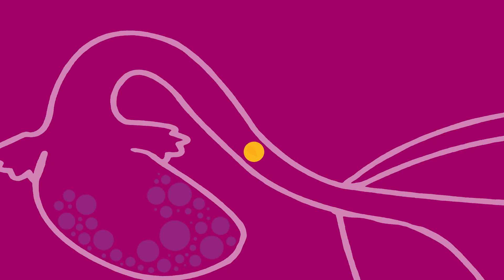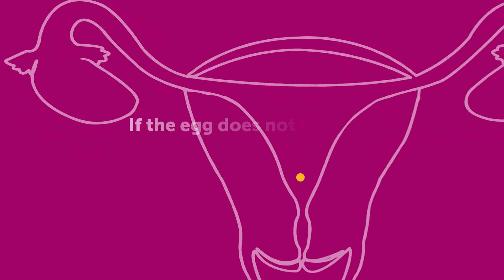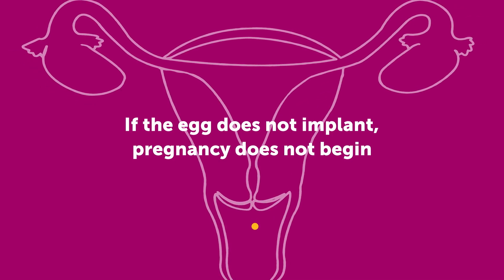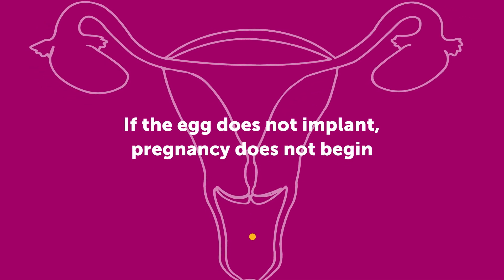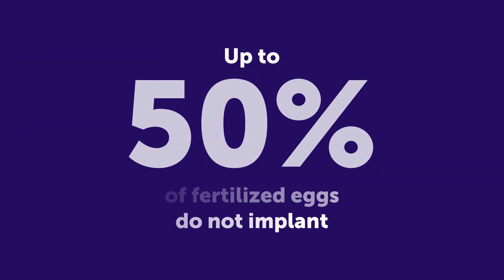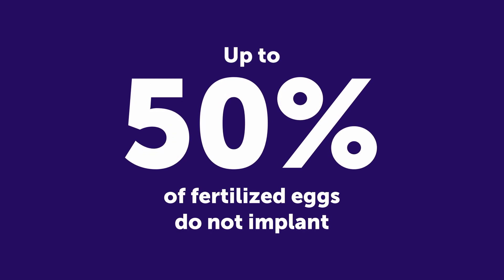Once the egg is fertilized, it then travels to the uterus. Two things can happen when the fertilized egg arrives in the uterus. One, the egg does not implant in the uterus — pregnancy does not begin, and the fertilized egg eventually leaves the body during menstruation. It is quite common for fertilized eggs to not implant. In fact, up to half of all fertilized eggs do not implant in the uterus.